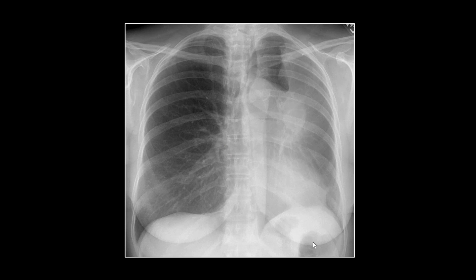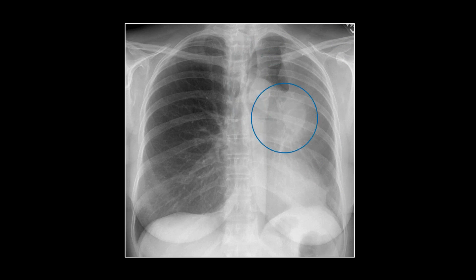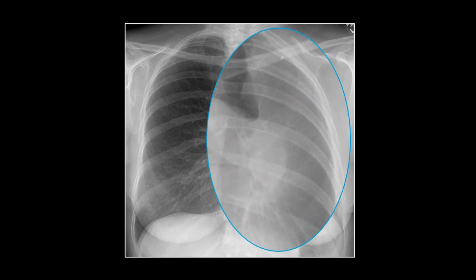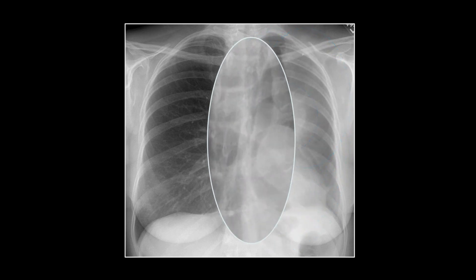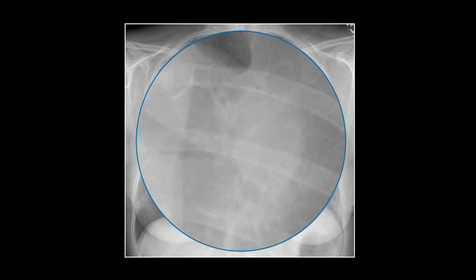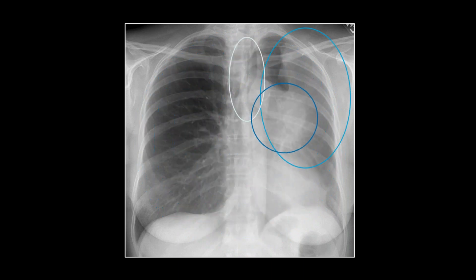Our first one is a classic left upper lobe atelectasis. You can see the atelectatic left upper lobe — it will drop out laterally and anteriorly as it loses volume. There's also a big mass in the hilar region and significant volume loss on the left. The trachea is shifting, and there is a mass with actual tapering of the left mainstem bronchus visible.